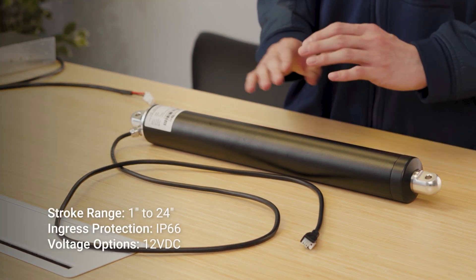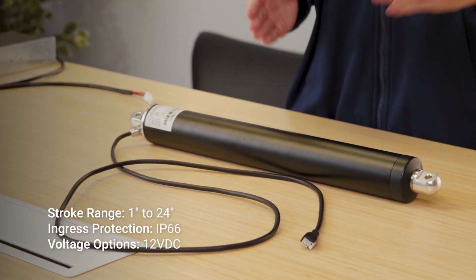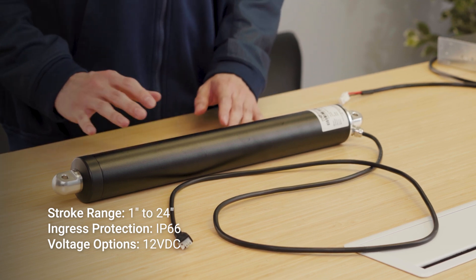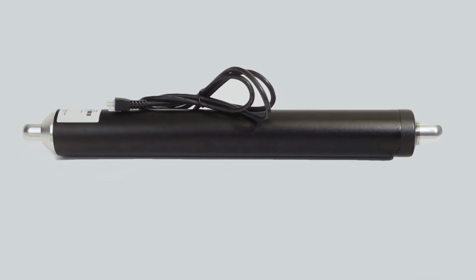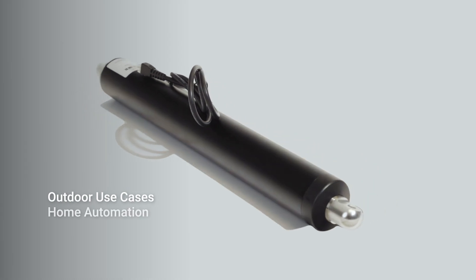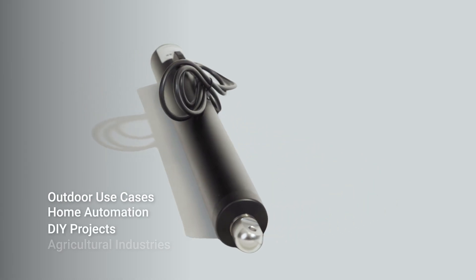The PA-ST1 offers a stroke range from 1 inch to 24 inches off-the-shelf and is compatible with 12VDC voltage. There is a wide range of applications for these actuators such as outdoor use cases, home automation, DIY projects, and agriculture industries.